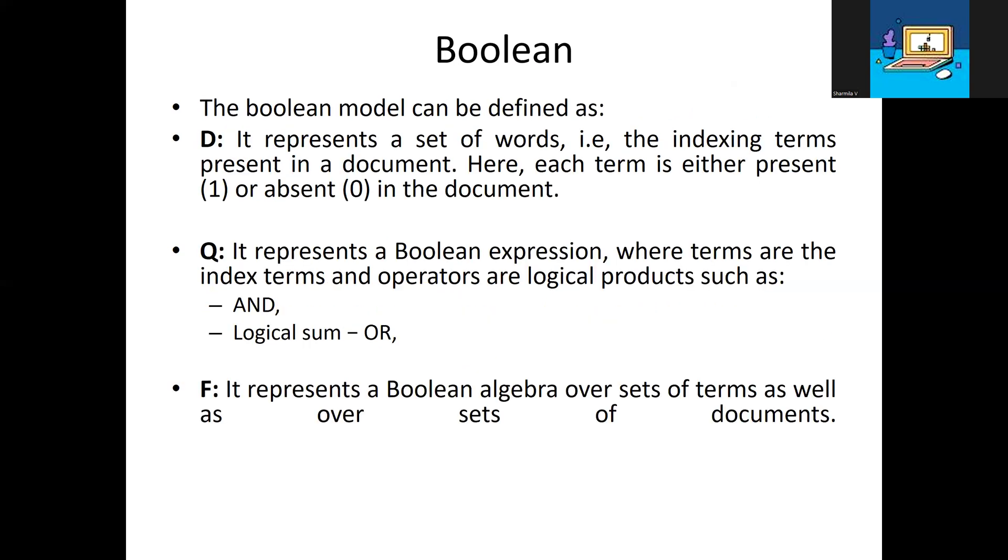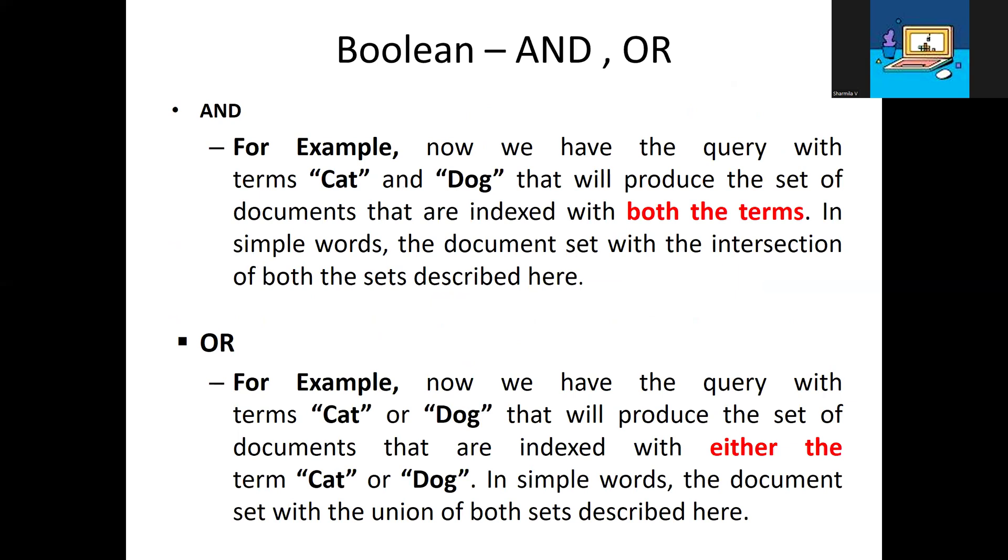The query is Q, the document is D, and F is a function representing Boolean algebra over a set of terms. For example, with terms like 'cat' and 'dog', if both terms belong to the document, it gives output 1. If either term is missing, it gives output 0. The output is binary: 1 or 0.